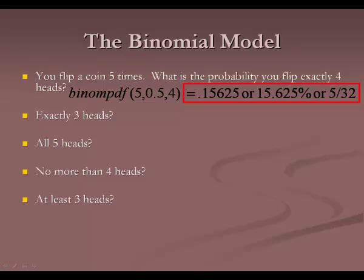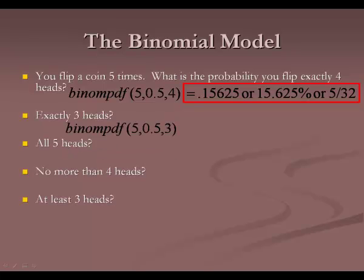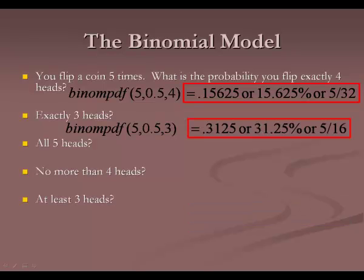Now try exactly three heads. BinomPDF(5, 0.5, 3) — 5 is the total, 0.5 is the probability, 3 is how many we want. This gives 0.3125, or 31.25%, which is 5/16 in fraction form.